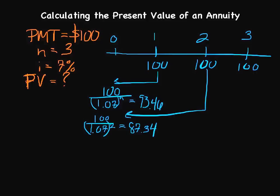Then we do the same thing. We take the last $100, move this over, and take $100 and divide it by 1.07 to the third power. We would actually get $81.63.